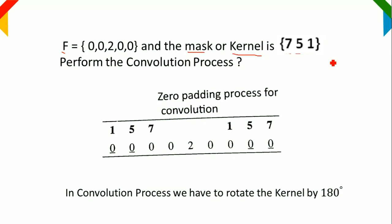When you are doing the convolution process, we have to rotate this kernel by 180 degrees. When you rotate the kernel by 180 degrees, you will get the resultant kernel as 1, 5, 7. That is, the original kernel is 7, 5, 1, but by rotating it 180 degrees you get 1, 5, and 7.